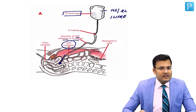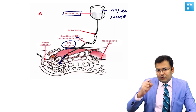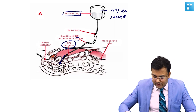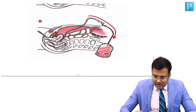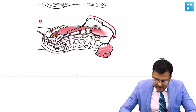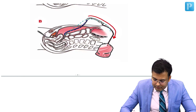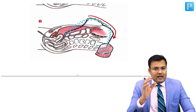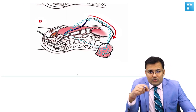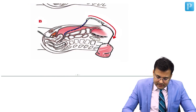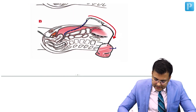The saline goes into the peritoneal cavity, then the IV fluid bag is placed on the ground. Whatever collection is in the peritoneal cavity slowly drains back into the bag. This collected fluid is then sent for examination.